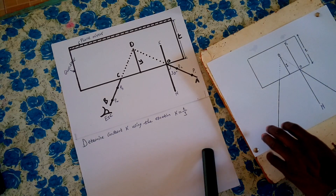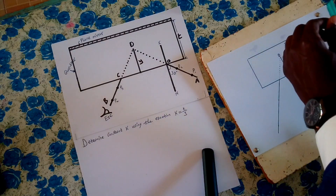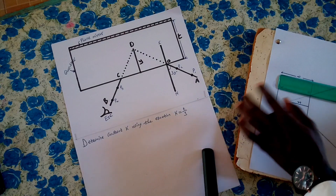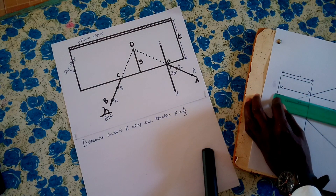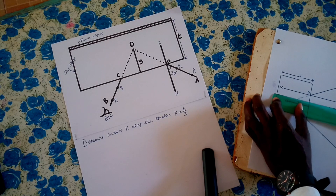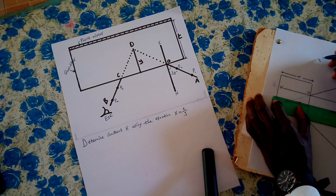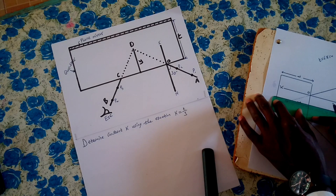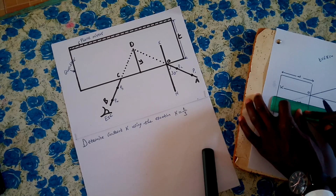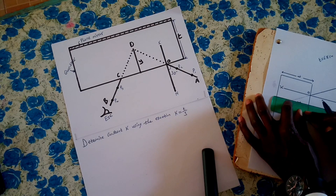So let's measure those distances. T is 6.8 cm. This other one is 2.5, so Y is 6.8 minus 2.5.